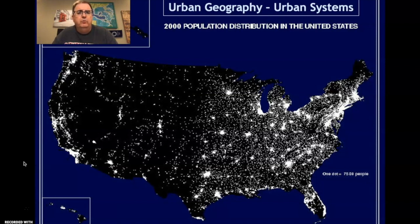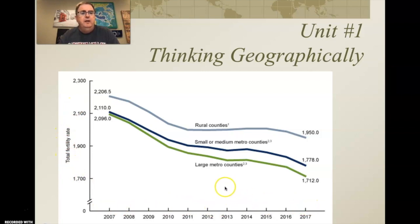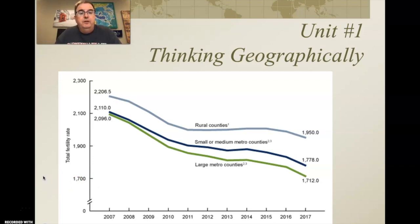You're most likely going to be asked on the test to look at some charts, graphs, or data. In this graph you can see total fertility rate on one axis and dates on the other, with labels for rural counties, smaller medium metro counties, and large metro counties. This is a population graph, but if you don't know what 'rural,' 'urban,' and 'metro' mean, this graph might be difficult to understand. Make sure you understand the concept of a metro area, even though those are urban concepts.